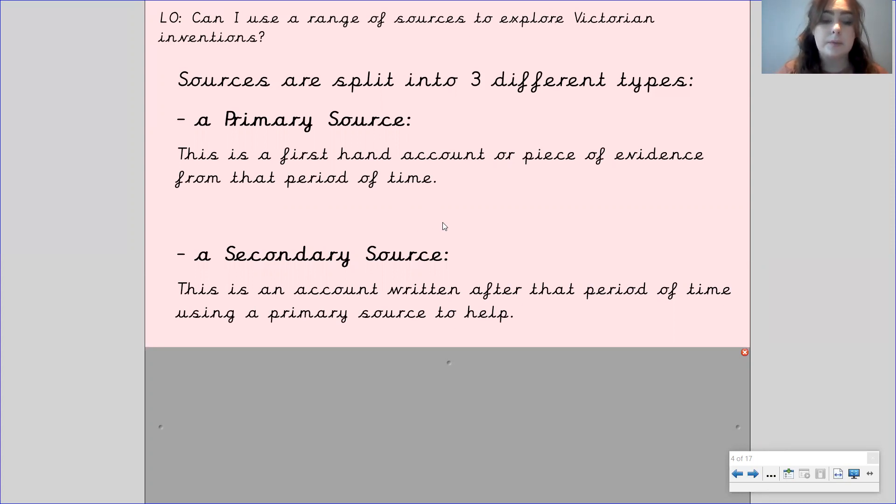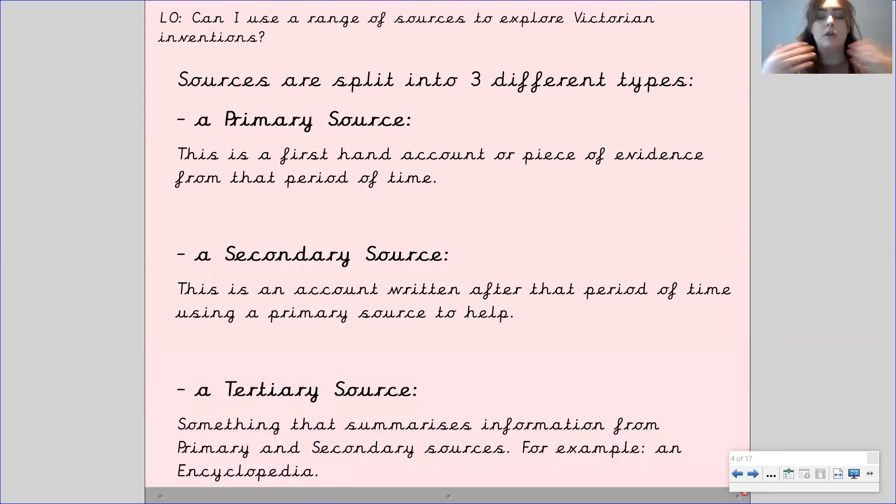It could also be somebody sharing information with you about these objects. And then finally we've got tertiary source. Tertiary source, tertiary source. Now this is something that summarizes information from primary and secondary sources. For example, it could be something like an encyclopedia, that is a tertiary source.